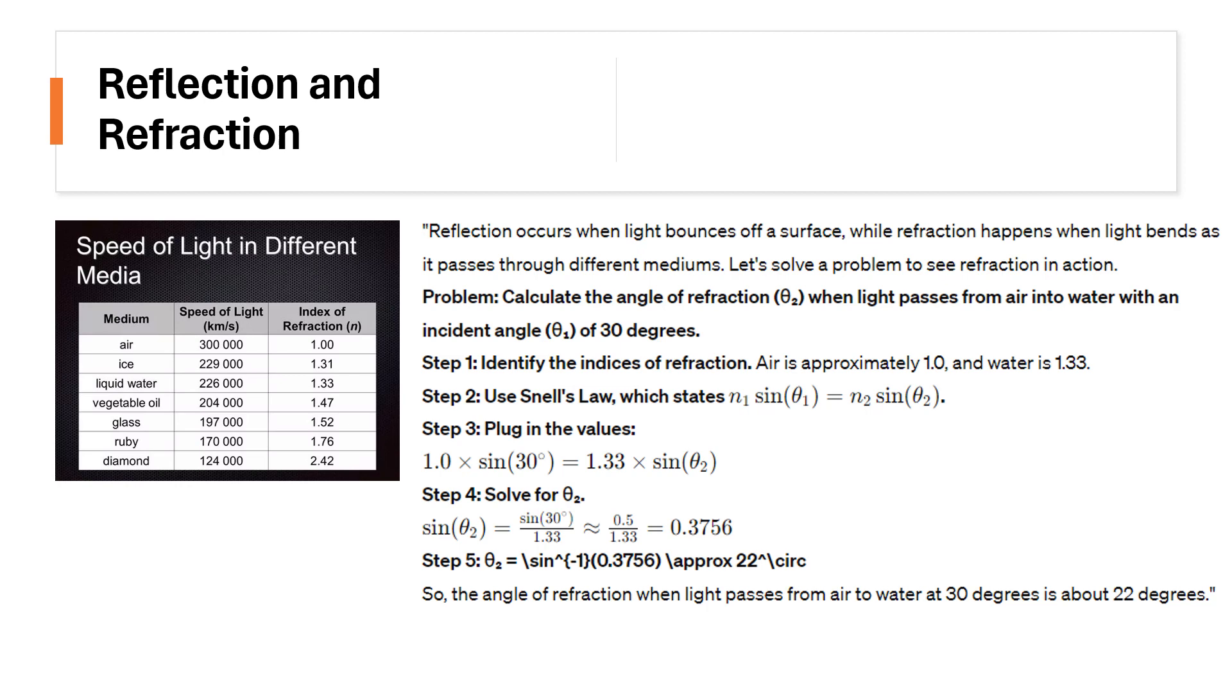Let's identify first the indices of refraction. For air, it's about 1.0, and for water it's about 1.33. That's also the values from the given table at the left side. Next, use Snell's Law, which states that n sub 1 or the original medium times sine theta sub 1 is equal to the second medium n sub 2 times sine theta sub 2.